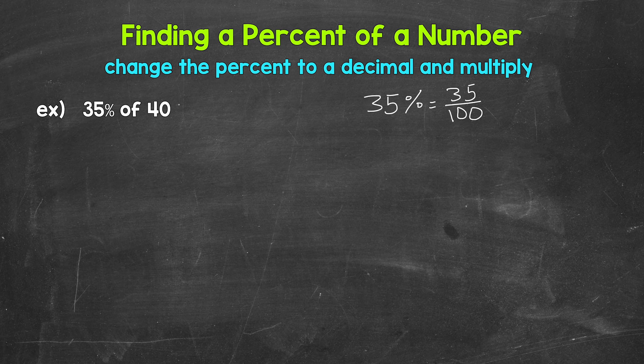So here we are finding a percent, a fraction of 40. And that word 'of' tells us to multiply. So when finding a percent of a number, we multiply. Now we can do 35 over 100, the fractional form of the percent, times 40.